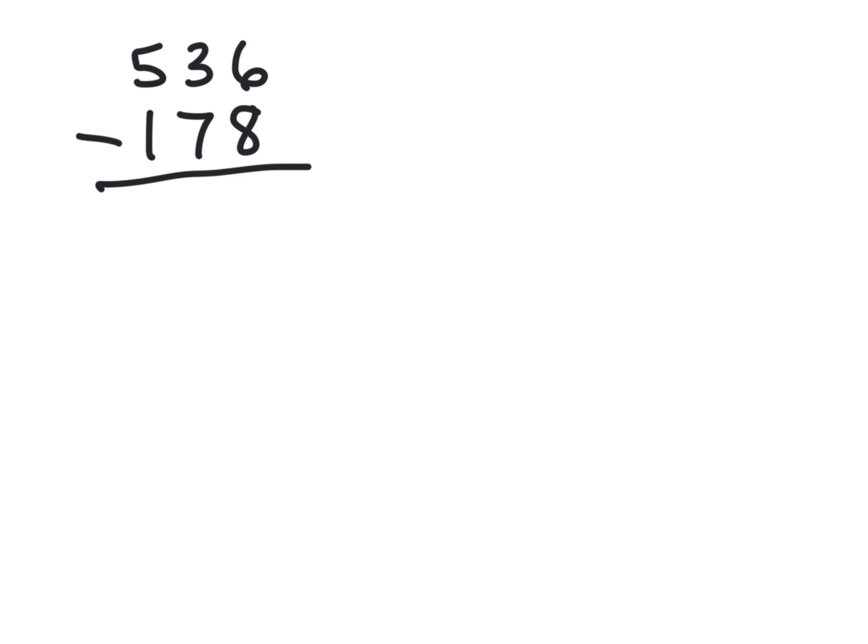So one last example, let's do 536 minus 178. And again, we're going to think of this as an addition problem with a missing addend. And so the addition problem would be 178 plus what gives us 536. And so we're going to record this thinking again on the empty number line.